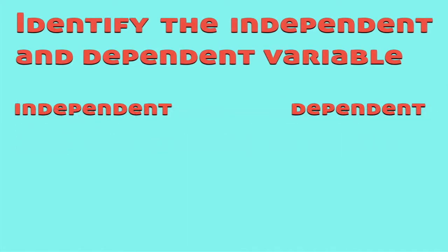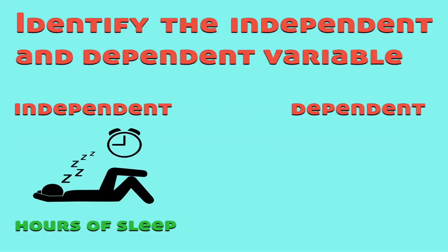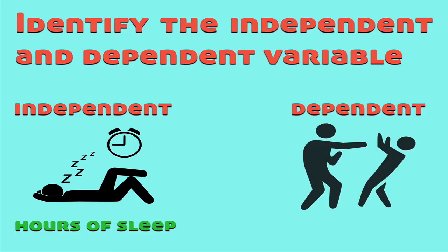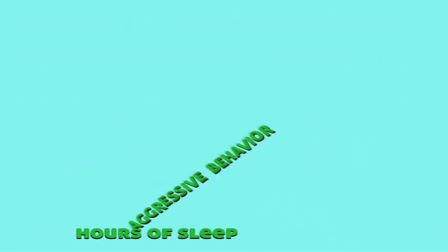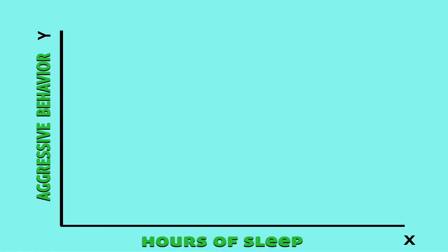So in this study, the independent variable is the hours of sleep that the participants are receiving, and the dependent variable is the aggressive behavior because that depends on the hours of sleep that they get. In a graph, we would have these two variables. Hours of sleep is what's being selected, and the response to that selection will be the aggressive behavior.